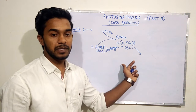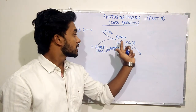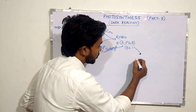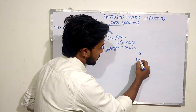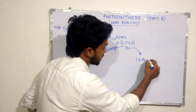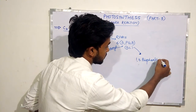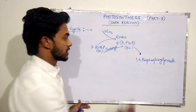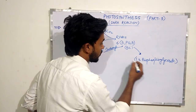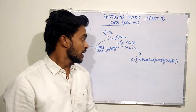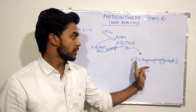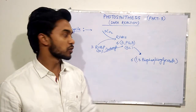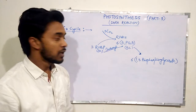The next step is the reduction step. The six molecules of 3-PGA get converted into 1,3-bisphosphoglycerate. Six molecules of 1,3-bisphosphoglycerate are formed. There are two phosphate groups present in this compound: the first one is at carbon number 1 and the second one is at carbon number 3, so total 12 phosphate groups are present across the six molecules.